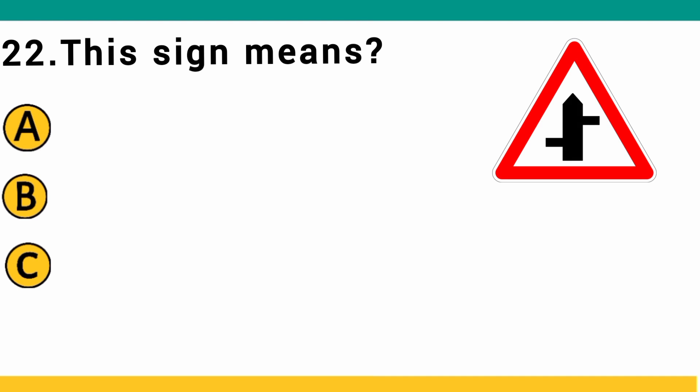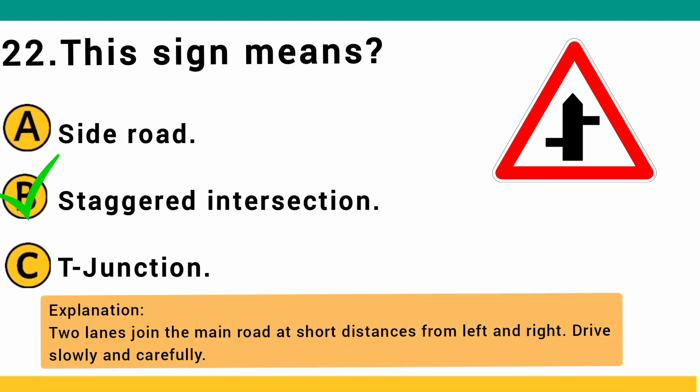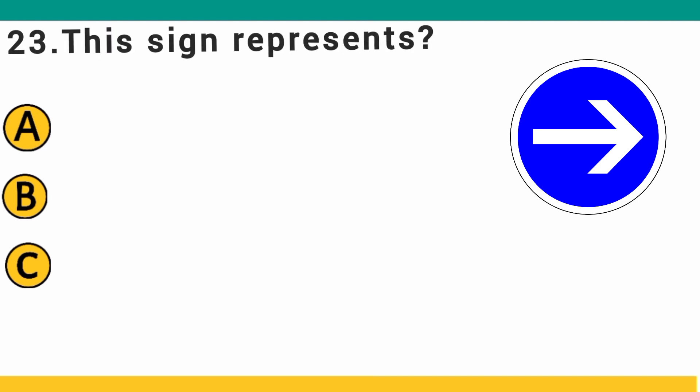This sign means: A) side road, or B) staggered intersection. Two lanes join the main road at a short distance from the left and right — drive slowly and carefully.